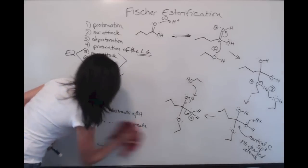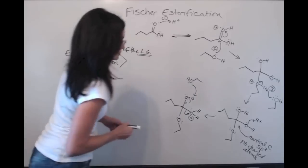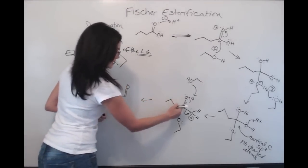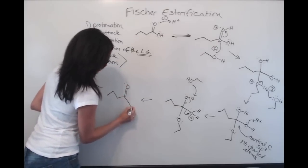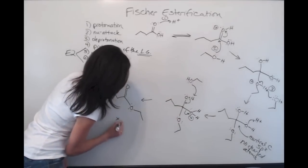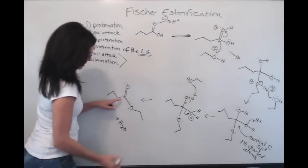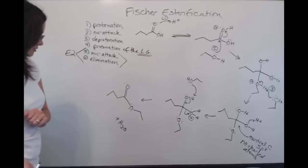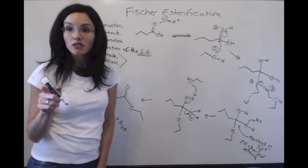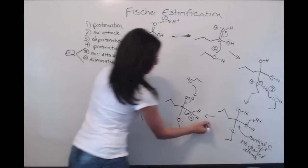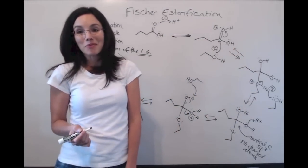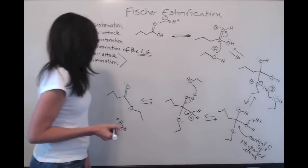And then we see the result of this. This has now formed a carbonyl. Our leaving group is gone. It's now water. And our OR group is still attached. And we have our ester. And once again, I have failed. I do this every time to draw in my equilibrium arrows. Don't let your professor catch you doing that on an exam because they'll burn you for it.